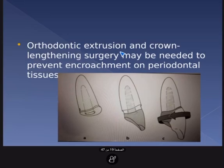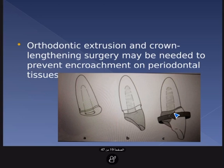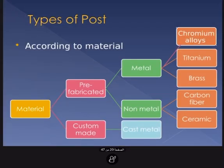To address this, orthodontic extrusion or crown lengthening surgery may be needed to prevent encroachment on the periodontal tissue. This is very important — from level 12 students to interns, they always ask whether a tooth can be restored or not. You need to see whether you can cover solid tooth structure. If solid tooth structure is not available, you cannot make a crown. You need to make at least two millimeters of tooth structure available to save the tooth.